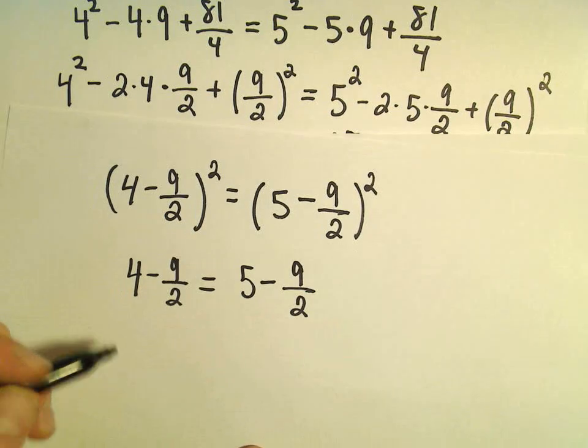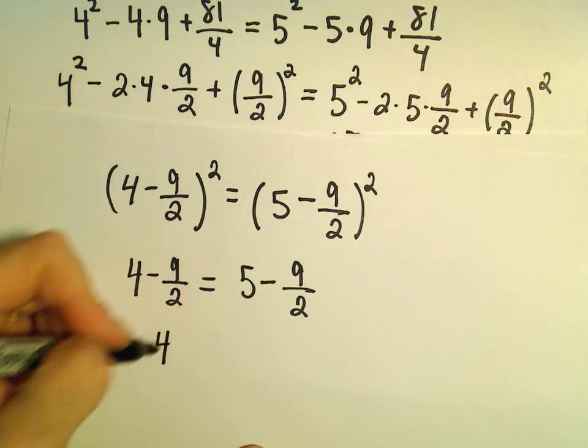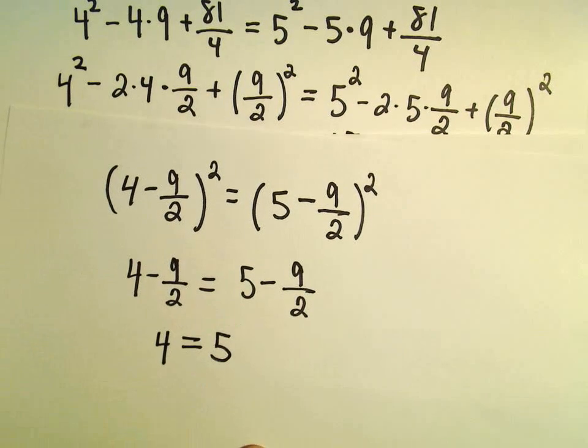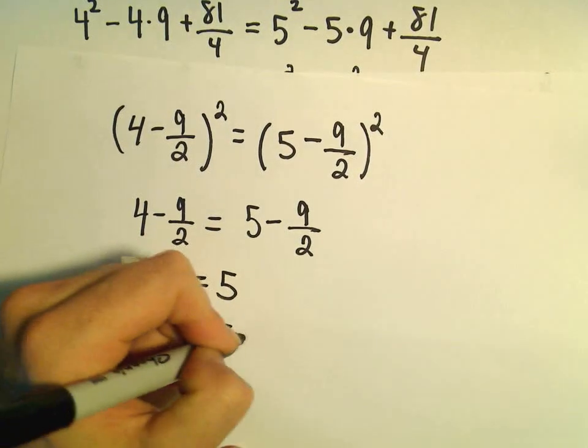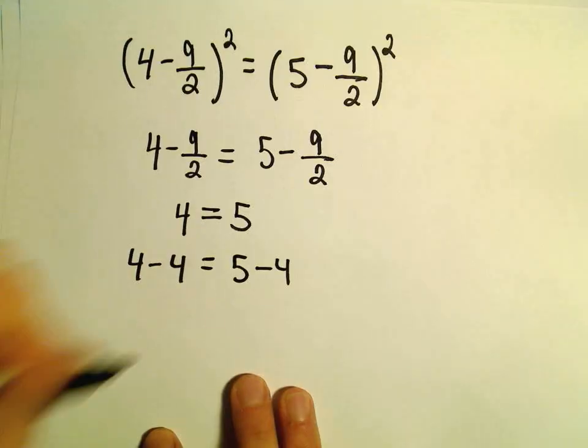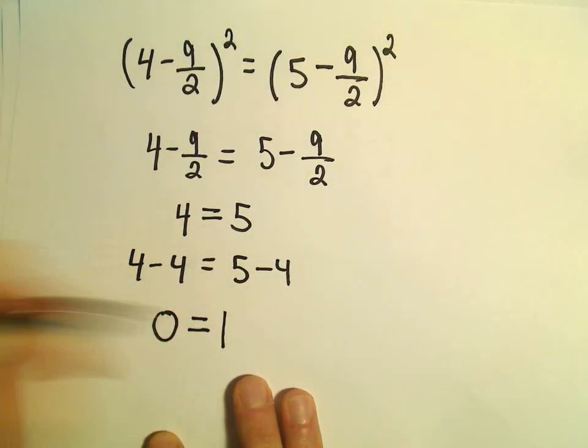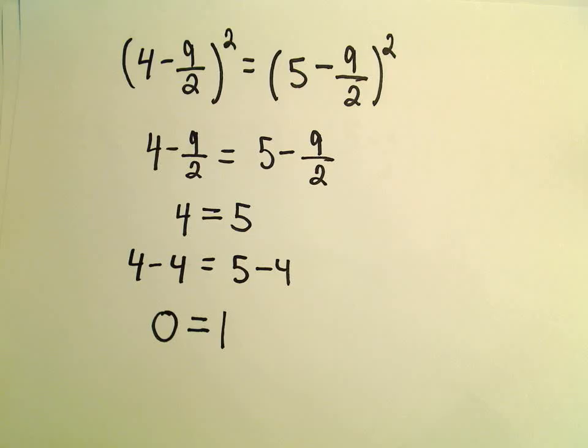We could add 9 over 2 to both sides. That tells us 4 equals 5. If we subtract 4 from both sides, that tells us 0 equals 1. Proof complete.